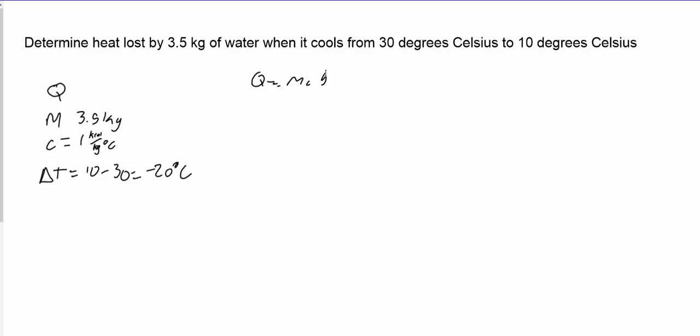And we can figure out—wow, that's sloppy—we can figure out how much energy is gained, or in this case lost, by our sample of water. So we take 3.5 times 1 times negative 20.